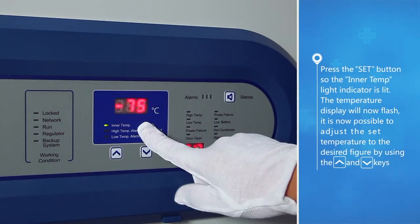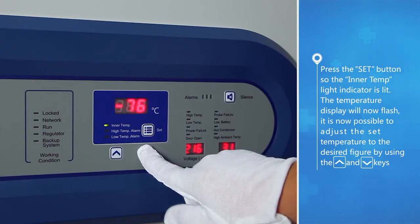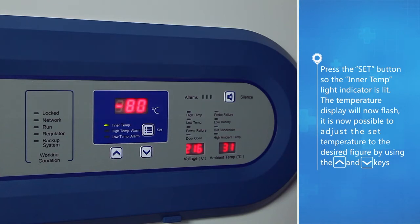Press the set button so the inner temp light indicator is lit. The temperature display will now flash. It is now possible to adjust the set temperature to the desired figure by using the up button and down button keys.